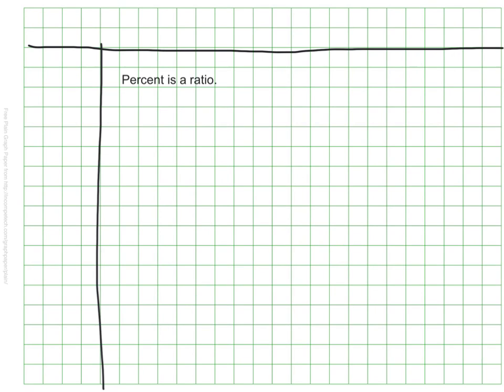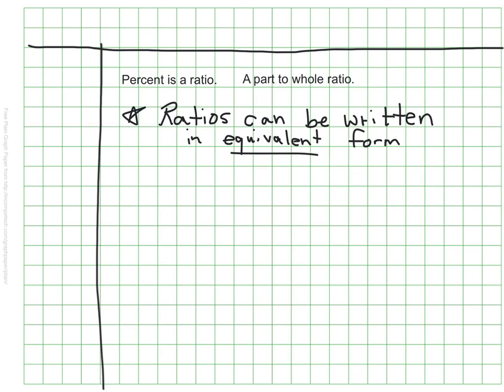A percent is a ratio. It's a part to whole ratio. It is telling us how much is represented out of a whole. Sometimes that number is really 100, but oftentimes it's not. It's a good time to remember that ratios can be written in equivalent forms. When we're talking about percent as a ratio, it's just an equivalent ratio that's out of 100.